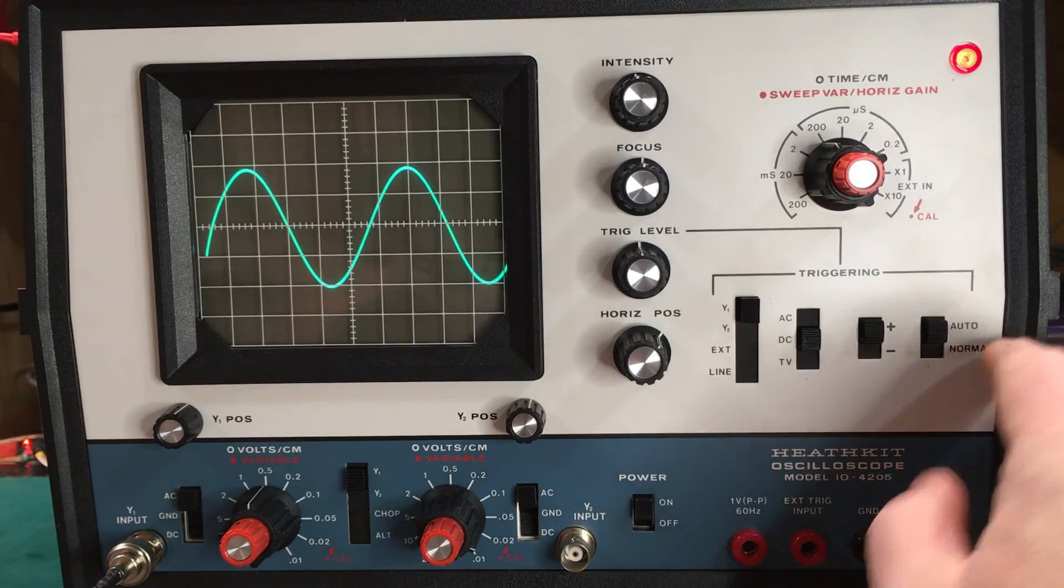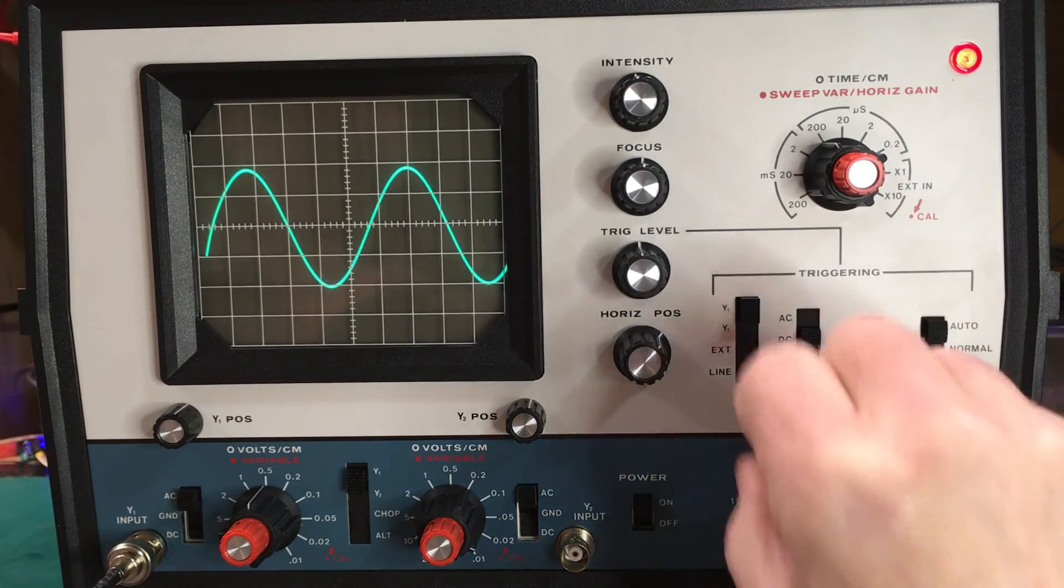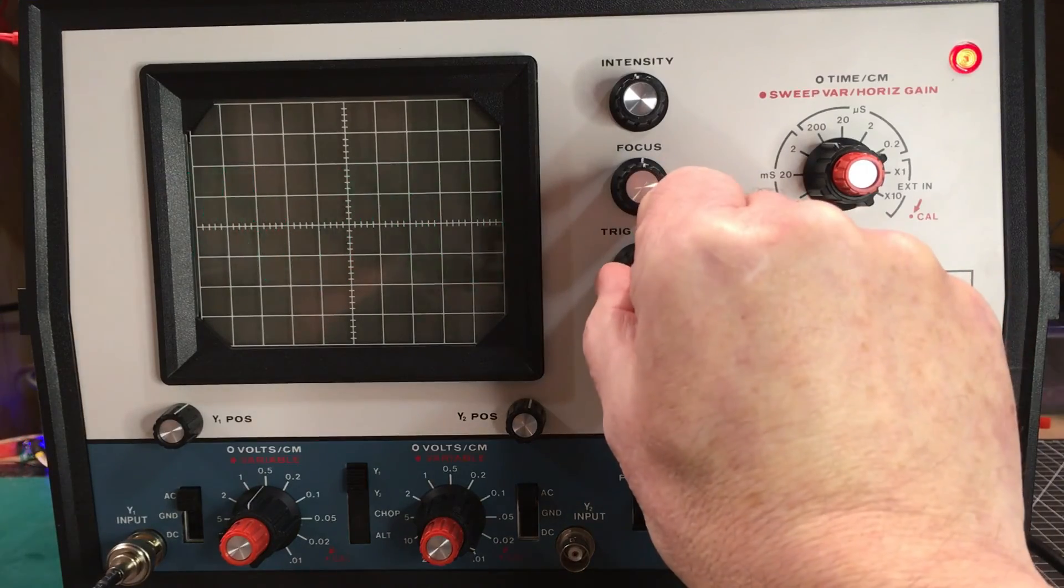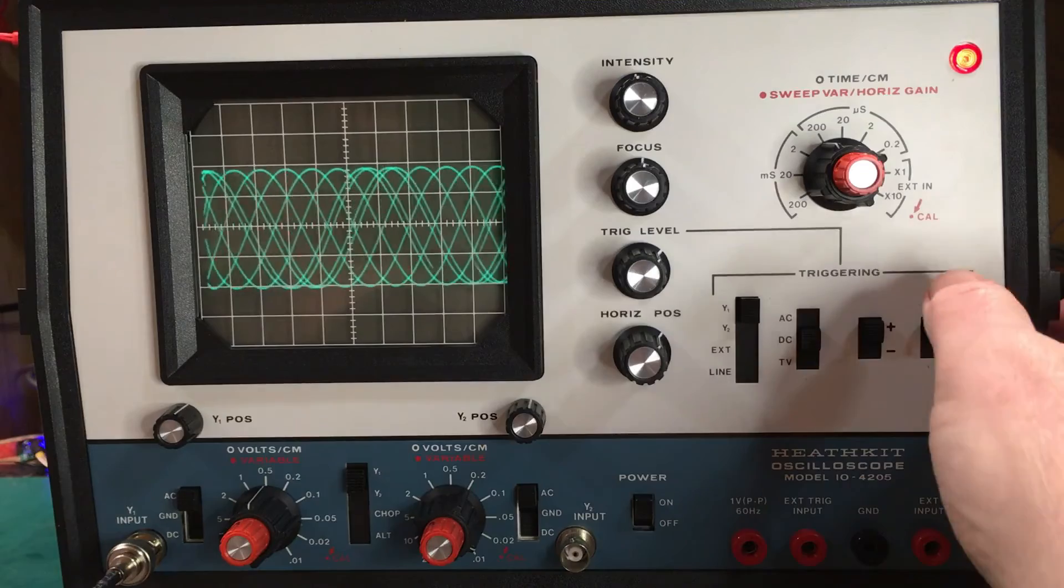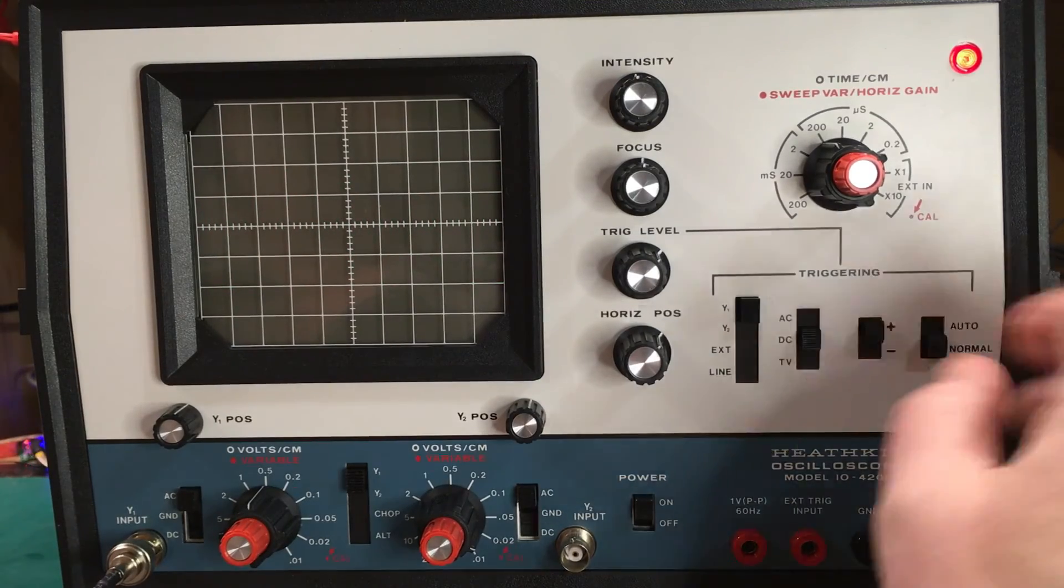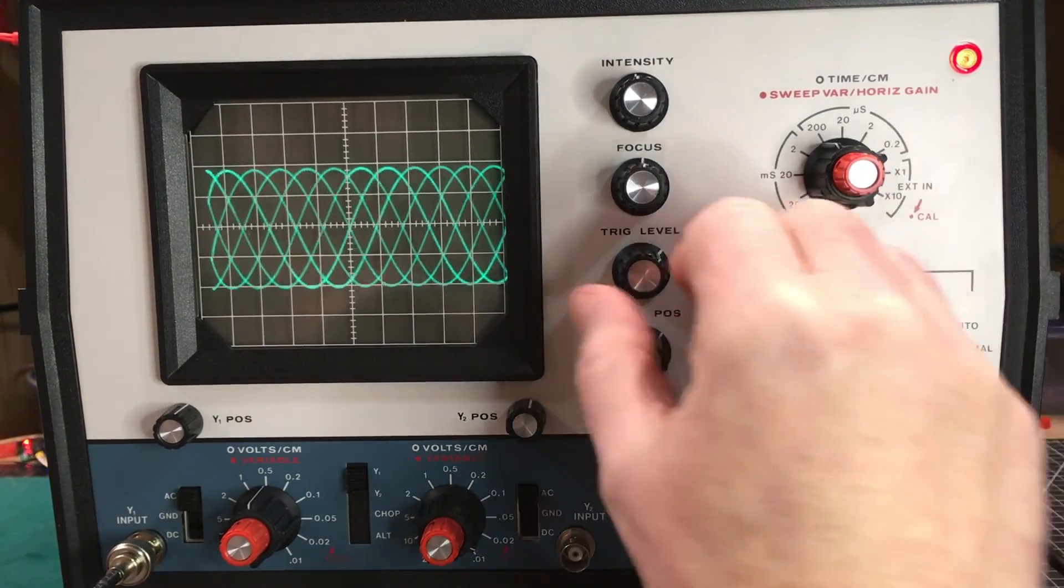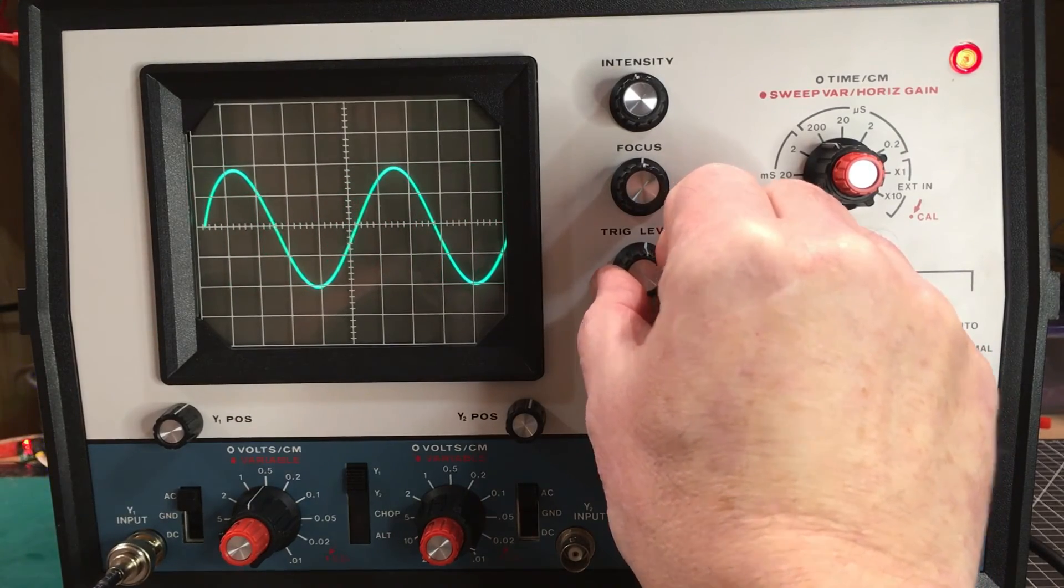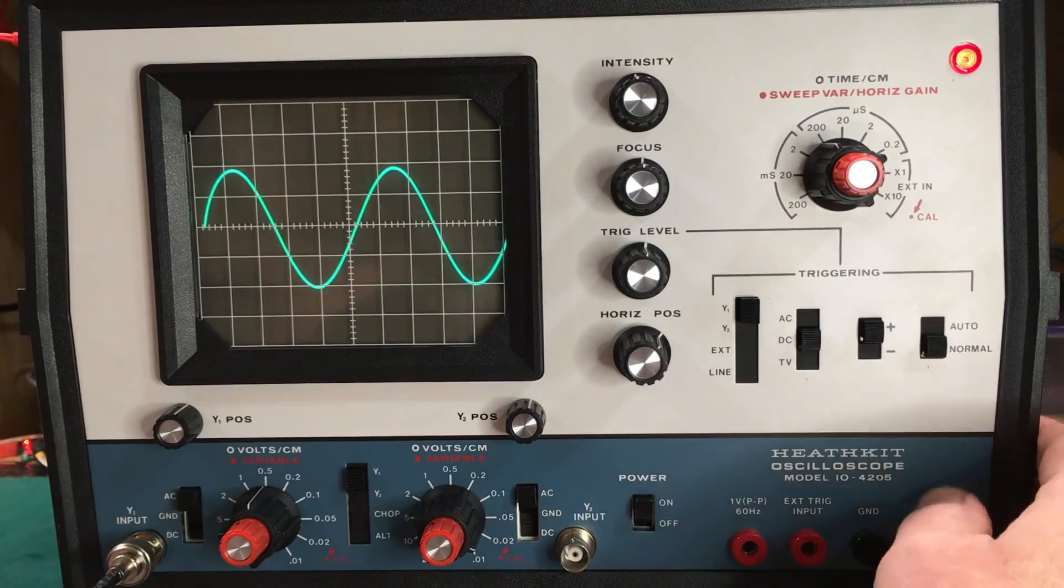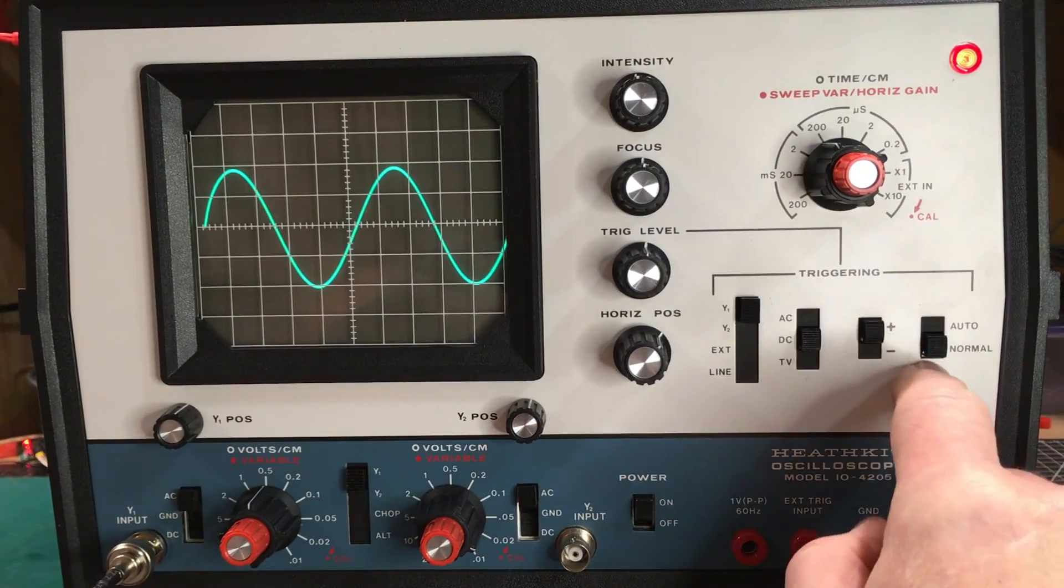And now auto and normal. So in auto mode, as you can see, if our trigger condition is not met, we still get a trace. And in normal mode, we won't. So the trigger level would have to be set. So we can put it back in auto, go over here, set a trigger condition. And then set your trigger to normal. And that's what that function is for.